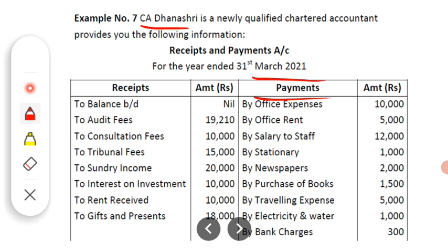Now let us look at the different payments made by CA Dhanashri during this particular year. The first payment is office expenses of Rs. 10,000. The second payment is office rent of Rs. 5,000 — the rent paid for the office. The third payment is salary to staff of Rs. 12,000 — the salary paid to employees working in the office.